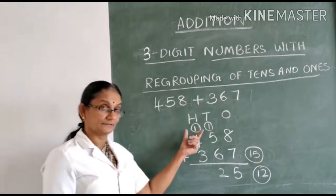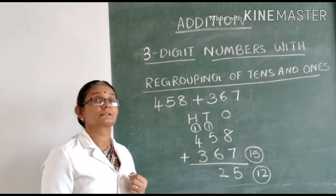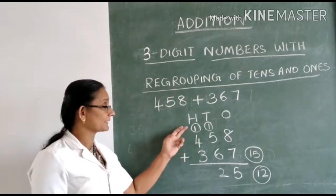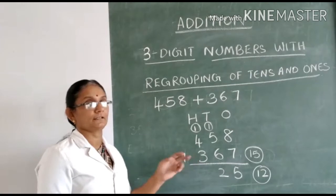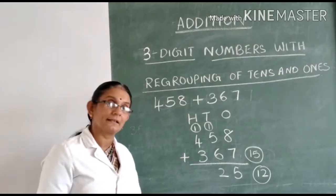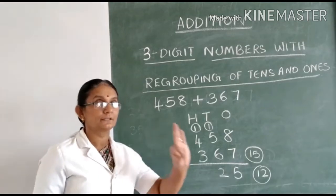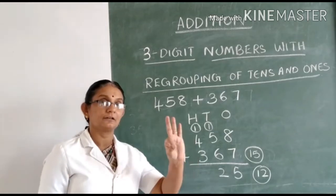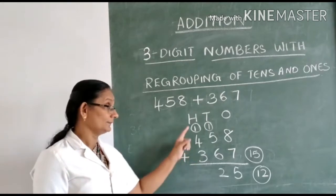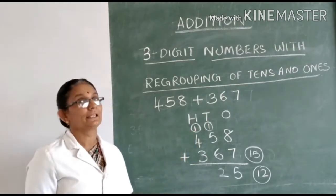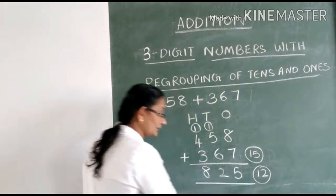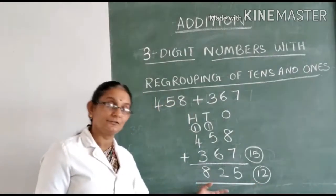Now the third step is to add the digits in the 100's space. What are the digits in the 100's space? 1, 4 and 3. So now what is 4 plus 3? Keep 4 in mind, 3 in hand: after 4 — 5, 6, 7. So 7 plus 1 will give you 8. You got the answer as 825.